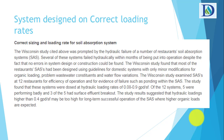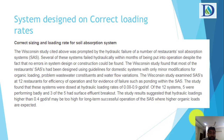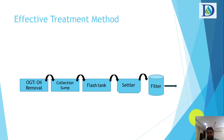A system should be designed at the correct loading rate — that is very important, as stated in a Wisconsin state research article on soil absorption systems. The effective treatment method is coagulation and flocculation, and this is the general scheme one should follow for restaurant kitchen gray water treatment.